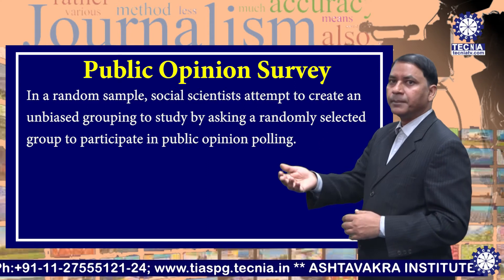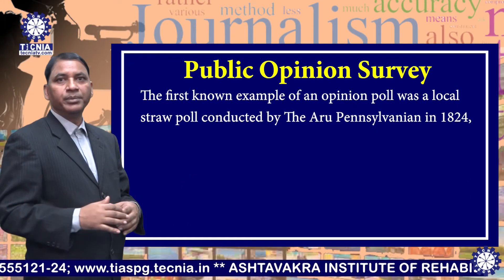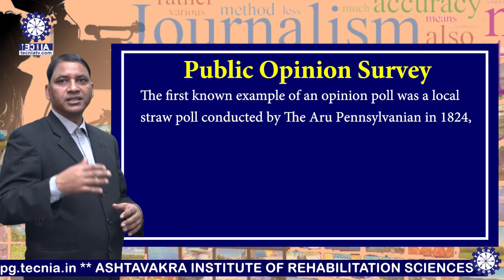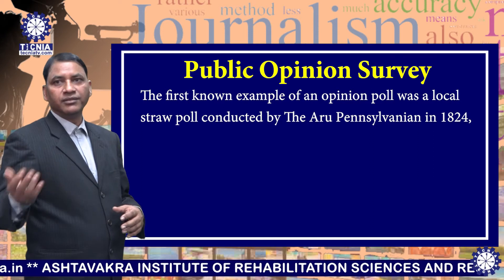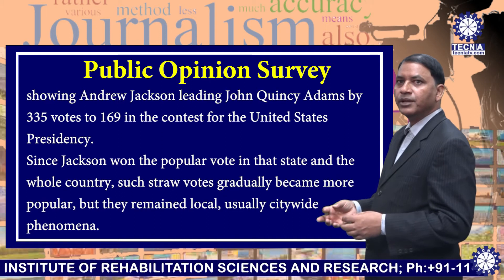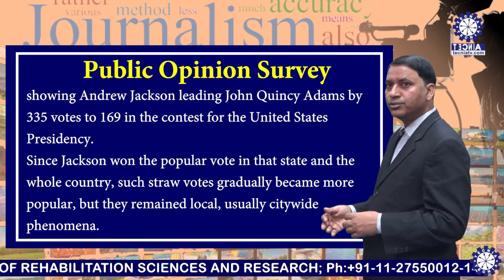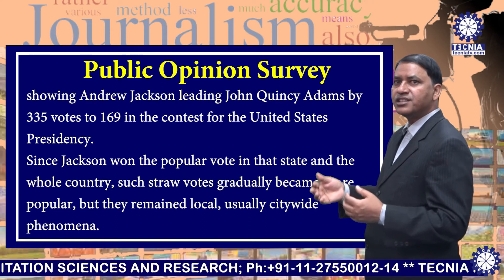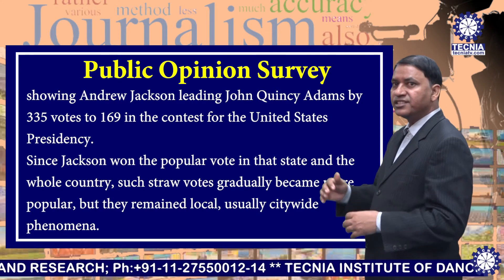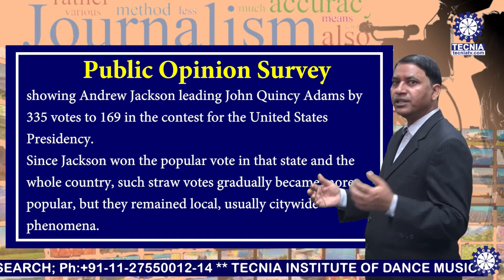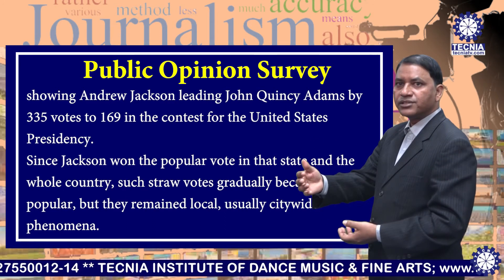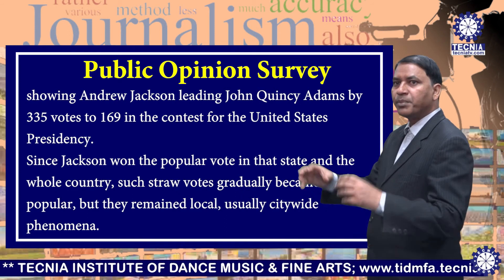The first known example of an opinion poll was a local straw poll conducted by the Aru Pennsylvania in 1824, showing Andrew Jackson leading John Quincy Adams by 335 votes to 169 in the contest for the United States Presidency. Since Jackson won the popular vote in that state and the whole country, such straw votes gradually became more popular.